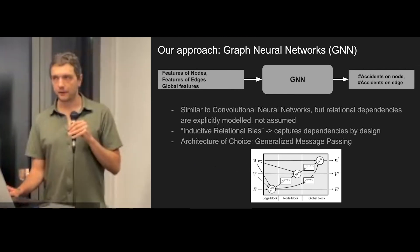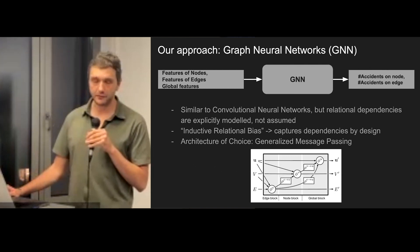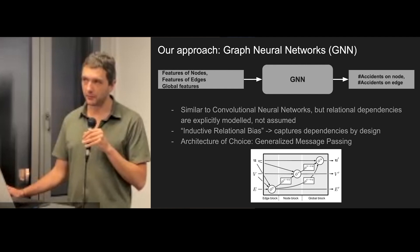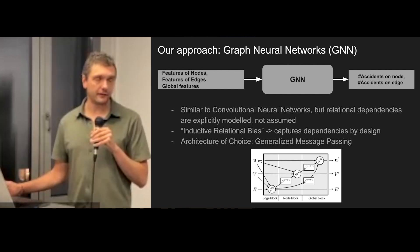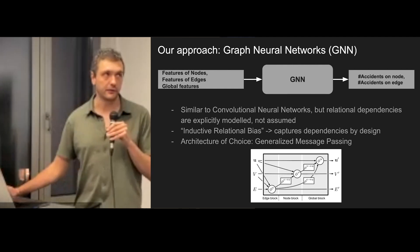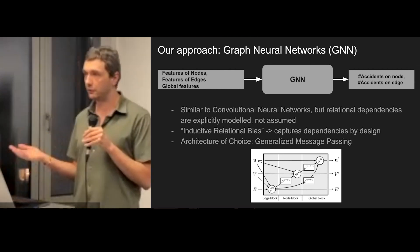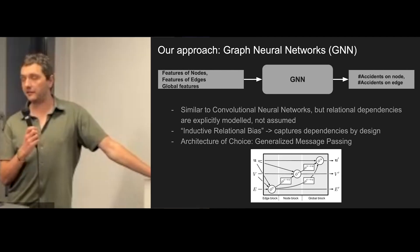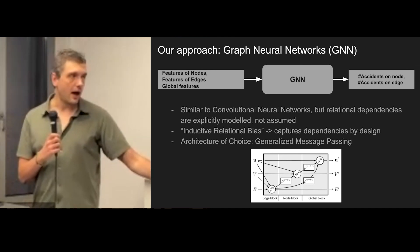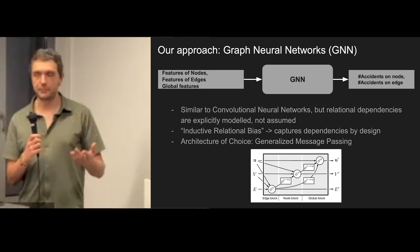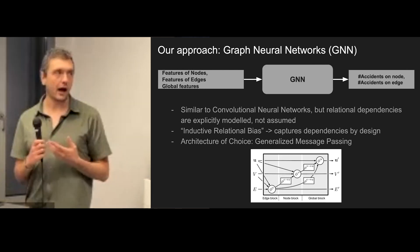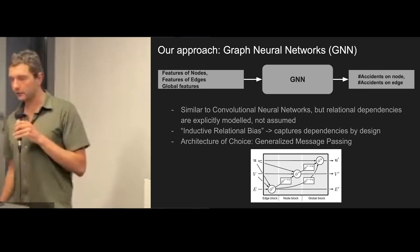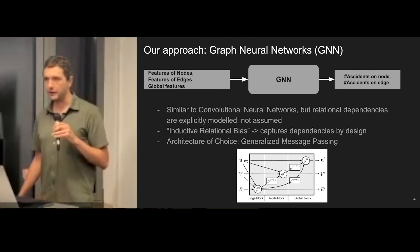Graph neural networks neatly incorporate these three levels of information. Many of you may not be familiar with GNNs since they are not yet commonly used. It suffices to say they are similar to convolutional neural networks, but relational dependencies are explicitly modeled rather than simply assumed. This creates a so-called inductive relational bias, which captures dependencies between nodes and edges by design. Our architecture of choice is generalized message passing, but going into its theoretical underpinnings would exceed the scope of this presentation. With that, I hand over to Anand for more technical details.